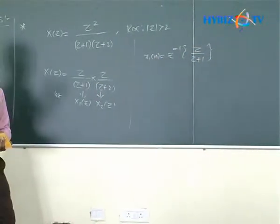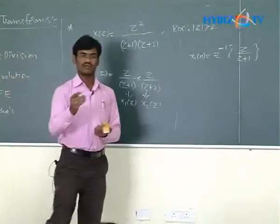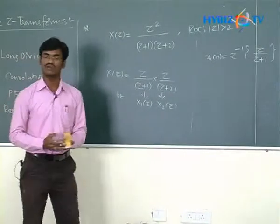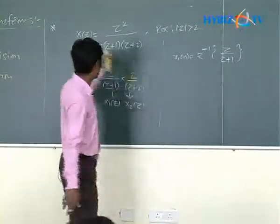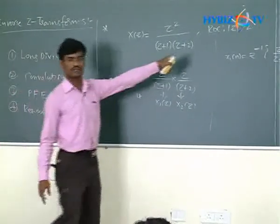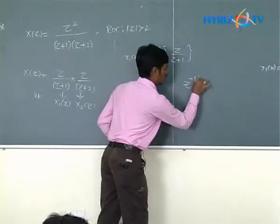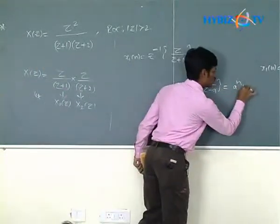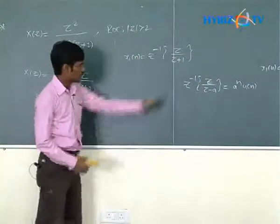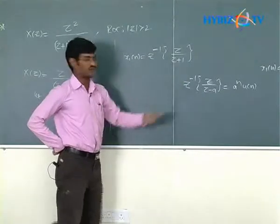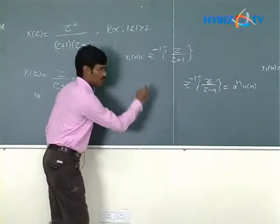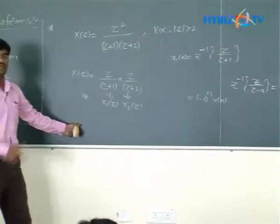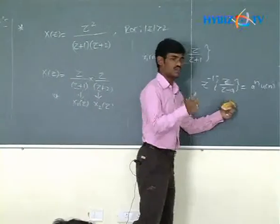Using the standard Z-transform property: the Z transform of aⁿ·u(n) equals Z/(Z−a), with ROC mod Z greater than |a|, confirming a right-sided sequence. So the inverse is: Z⁻¹[Z/(Z−a)] = aⁿ·u(n). Comparing Z/(Z+1) with Z/(Z−a), we get a = −1. Therefore, X1(n) = (−1)ⁿ·u(n).